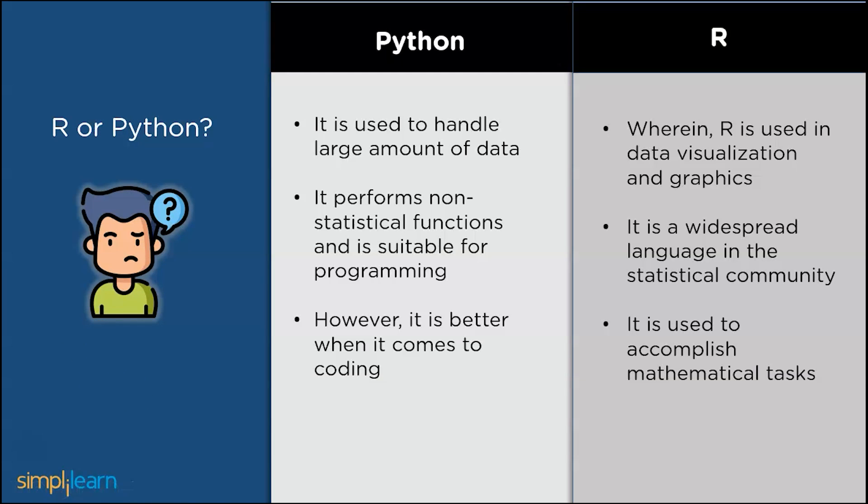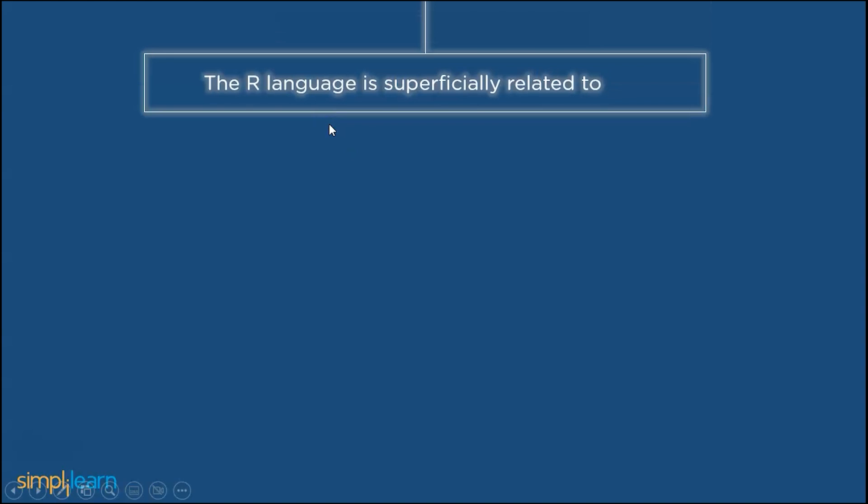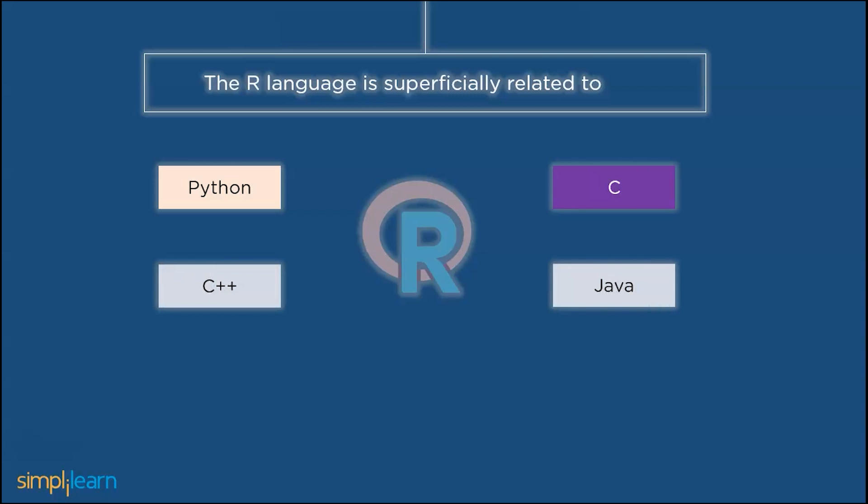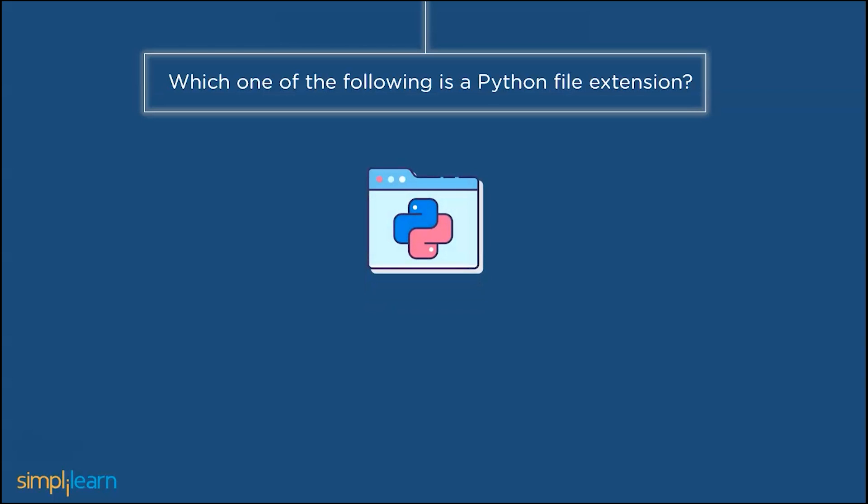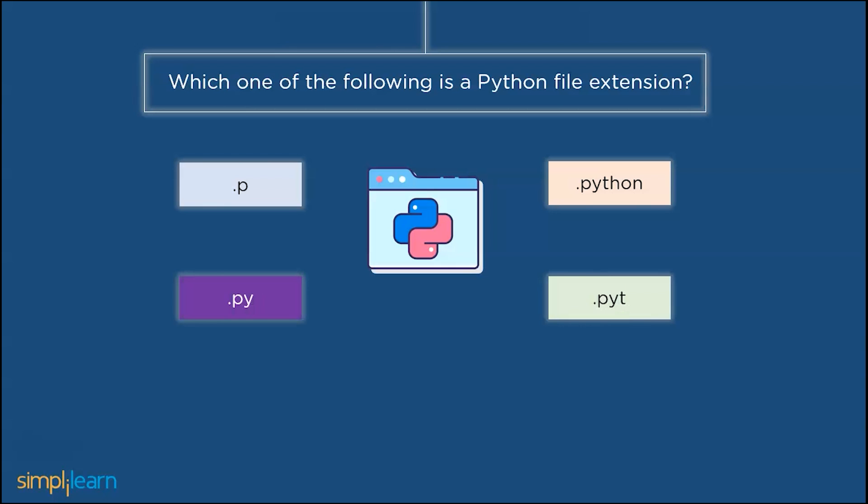Let me answer the queries that I asked regarding R and Python. Do you guys remember the questions? The query was, R language is superficially related to which language? So, the answer for the question is C language. The next question was, which one of the following is a Python file extension? It was an easy question. The answer for that question is .py.